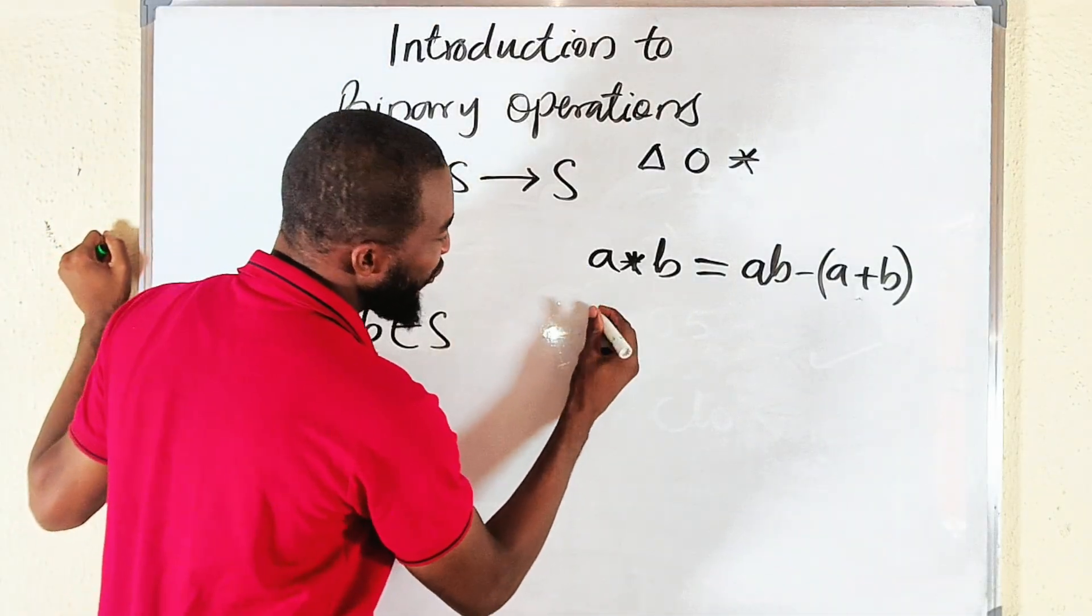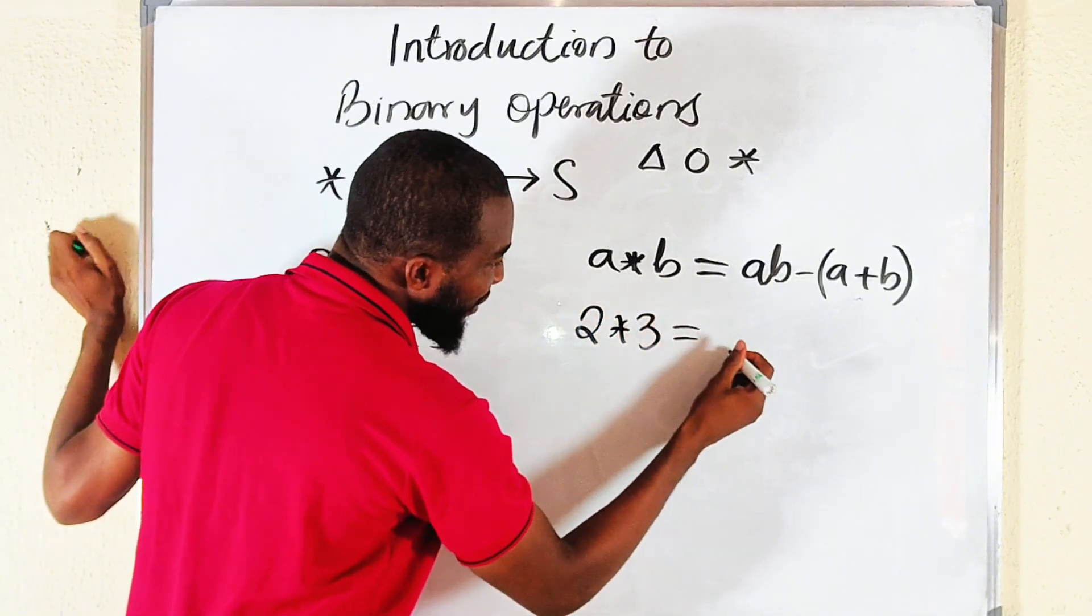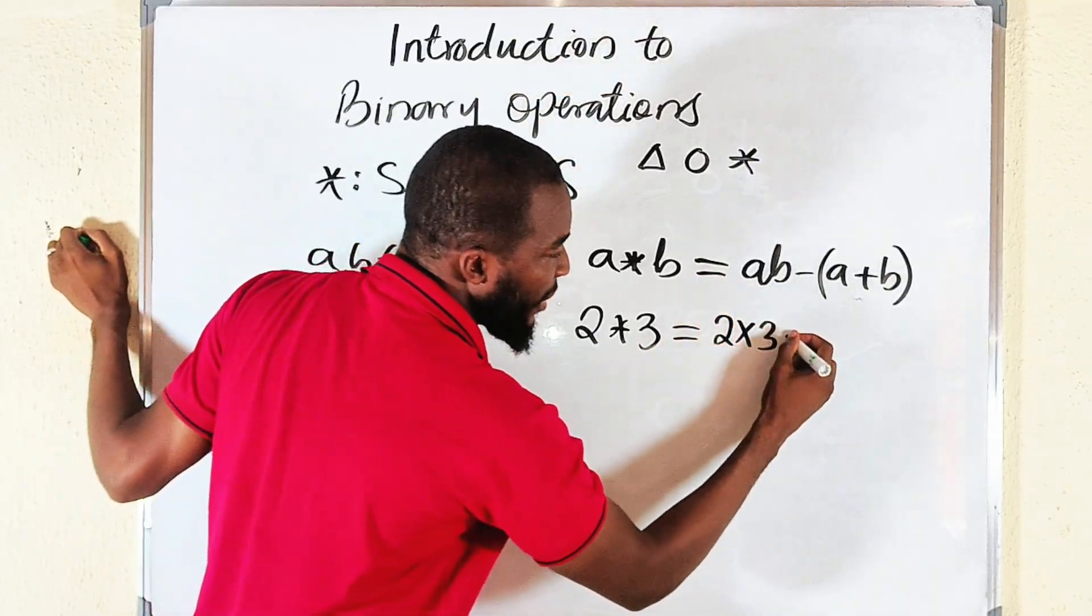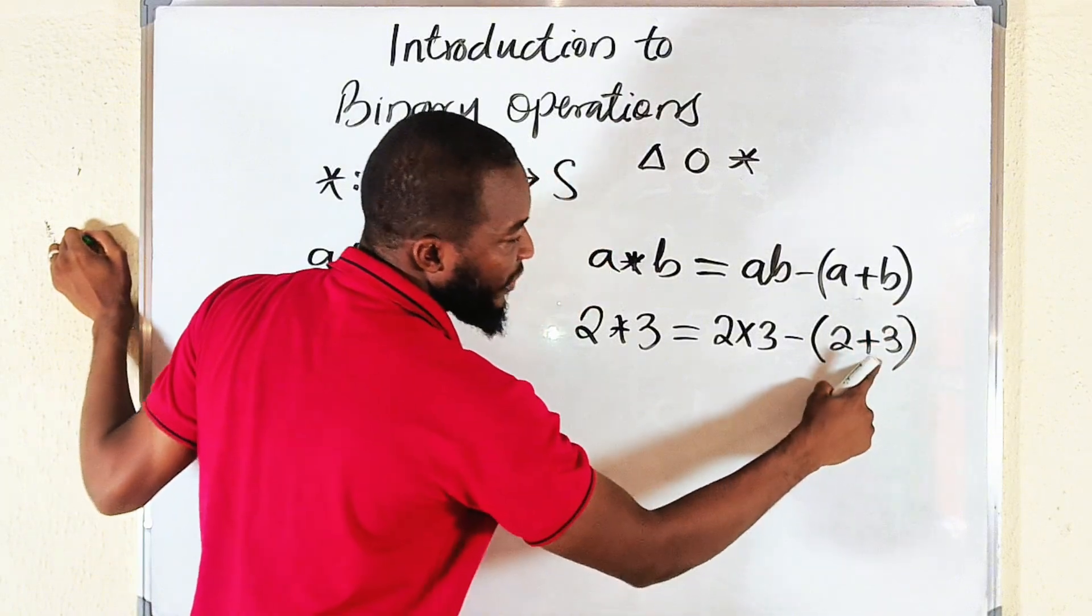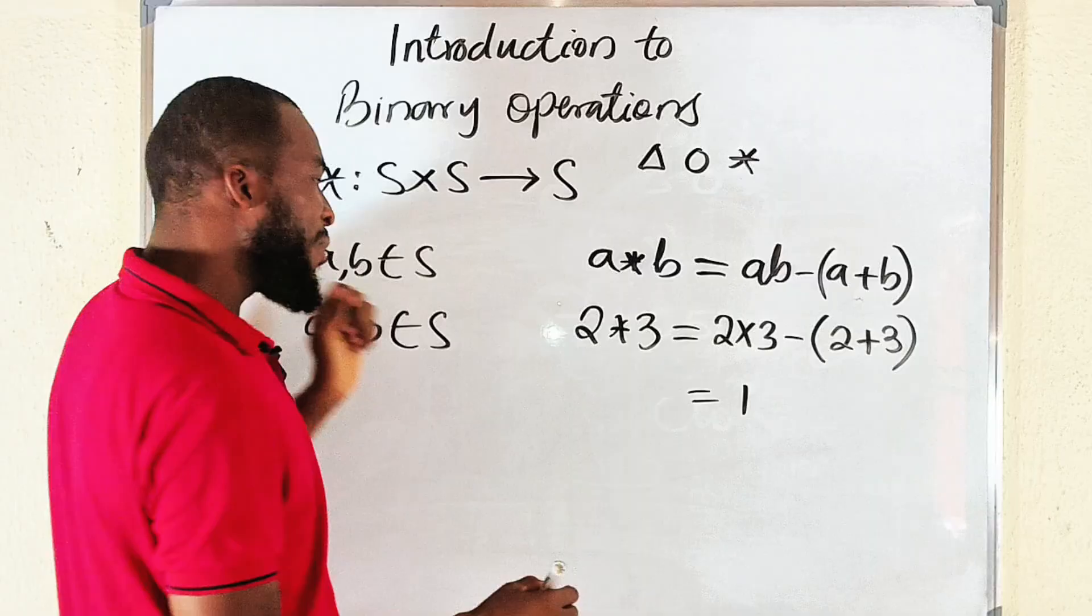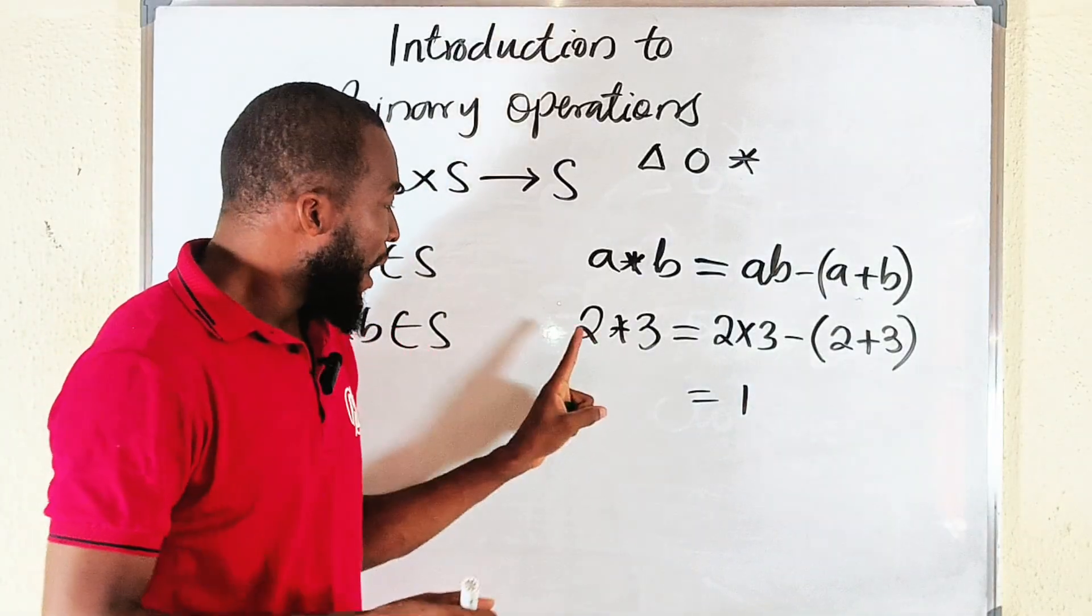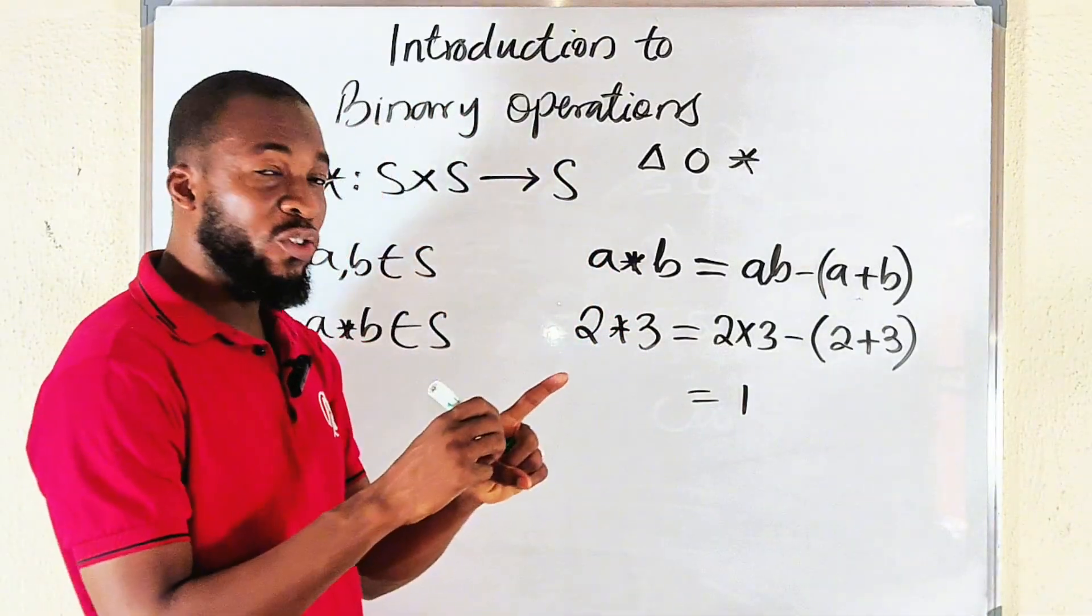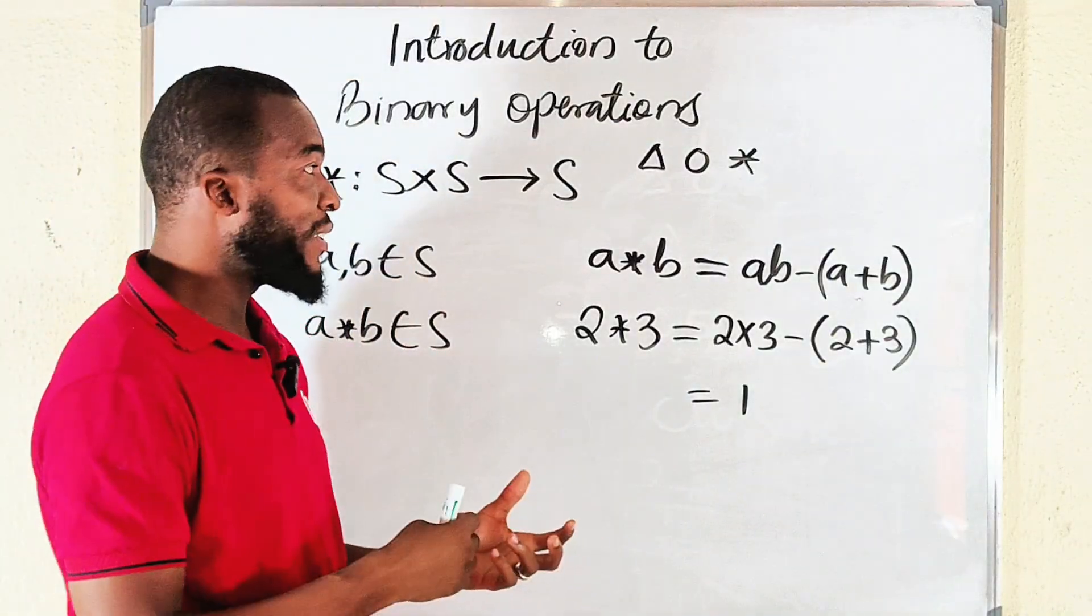Let's say a is 2 and b is 3. It means that this is equal to 2 multiplied by 3, because this is multiplication, minus 2 plus 3. 2 plus 3 is 5. 2 times 3 is 6. So 6 minus 5 is 1. It means that 2 asterisk 3 will give you 1.